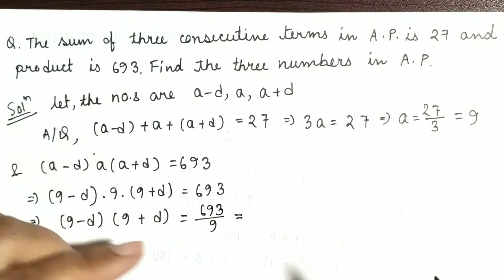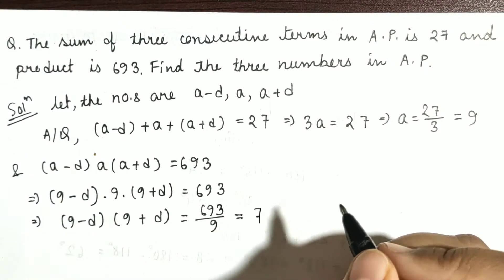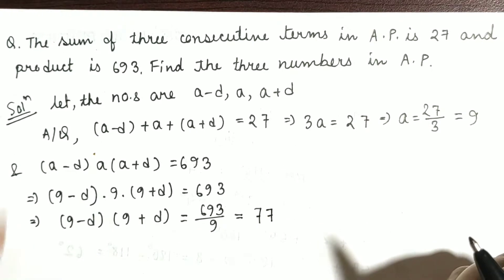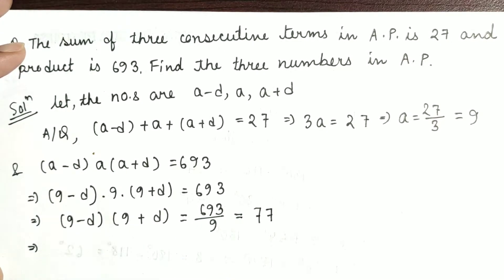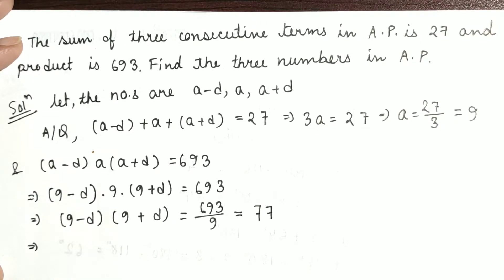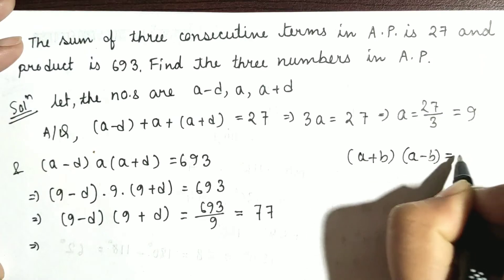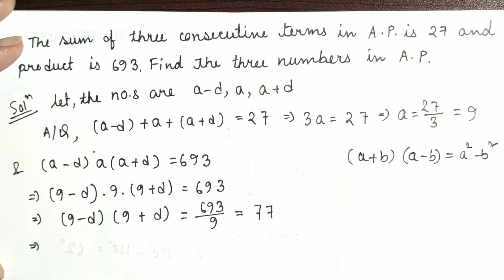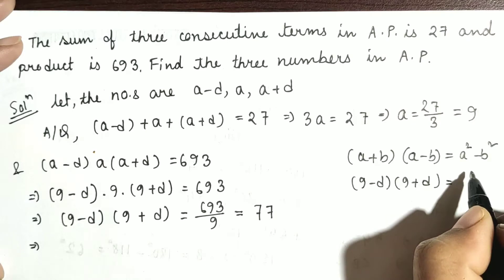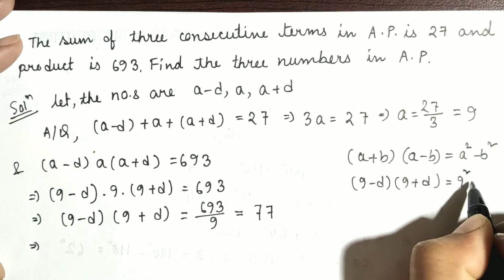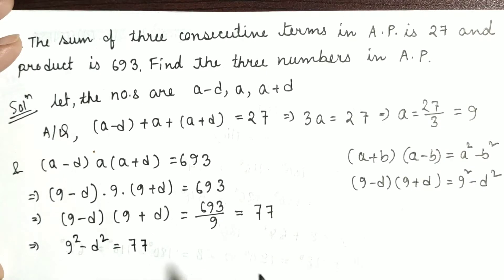Dividing 693 by 9 gives 77. Now, 9 minus D into 9 plus D is similar to the identity A plus B into A minus B, which gives the formula A square minus B square. Comparing with that formula, we get 9 square minus D square equal to 77.